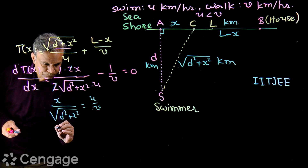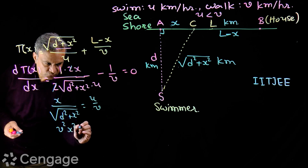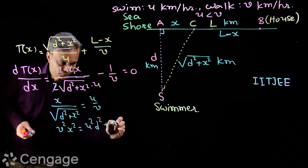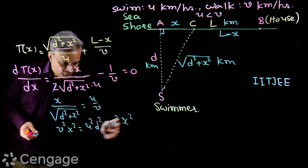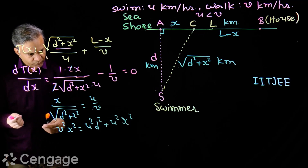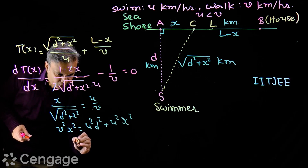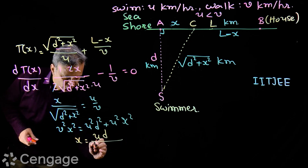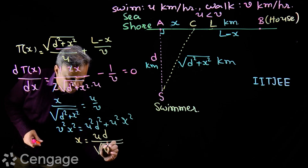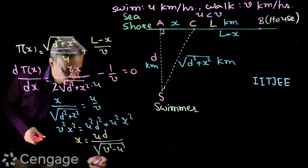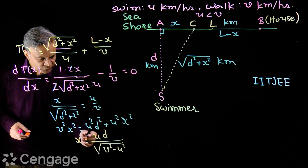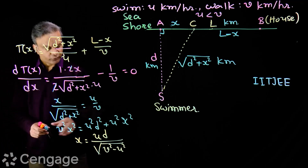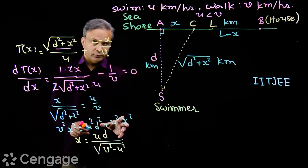From x / √(d² + x²) = u/v, we get v²x² = u²d² + u²x², which gives x = ud / √(v² − u²). We take the positive value since x must be positive.